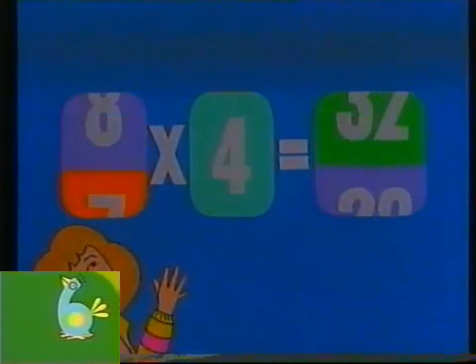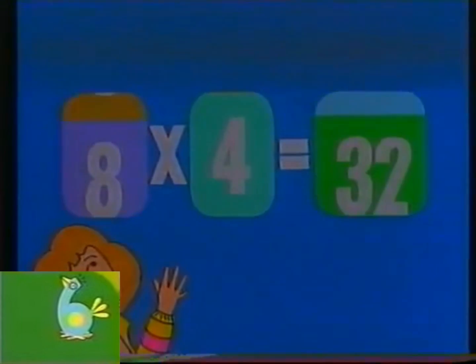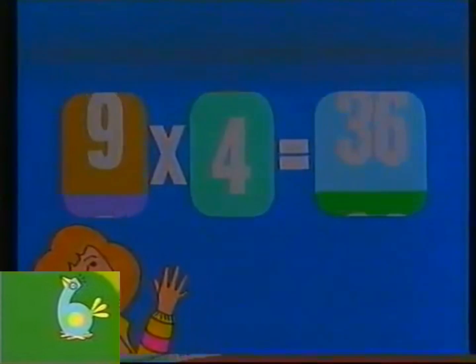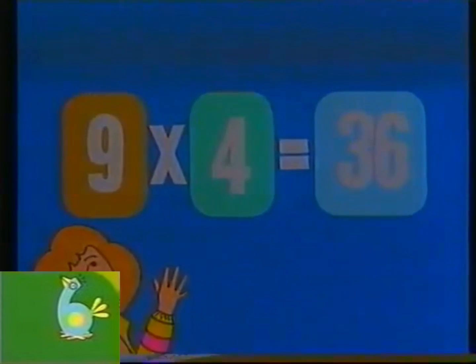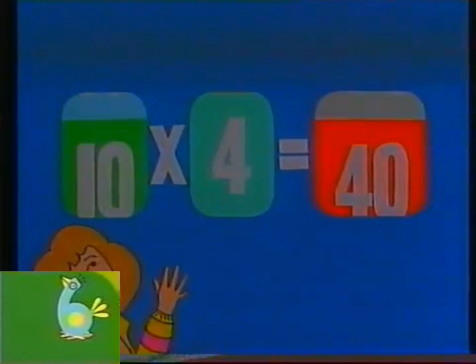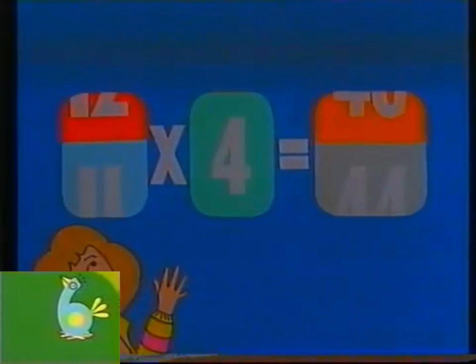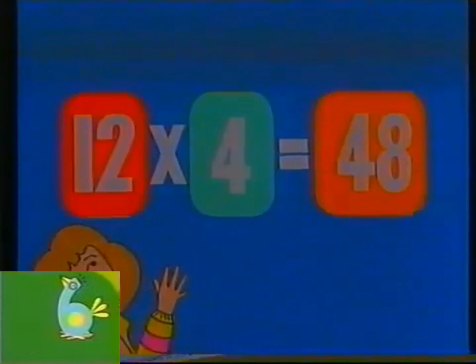Eight times four is thirty-two. Nine times four is thirty-six. Ten times four is forty. Eleven times four is forty-four. Twelve times four is forty-eight.